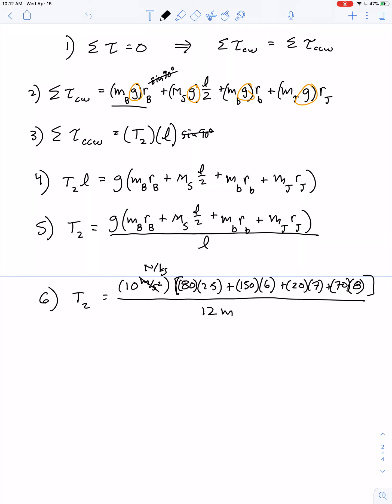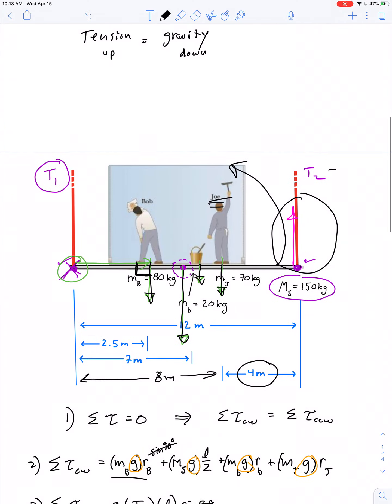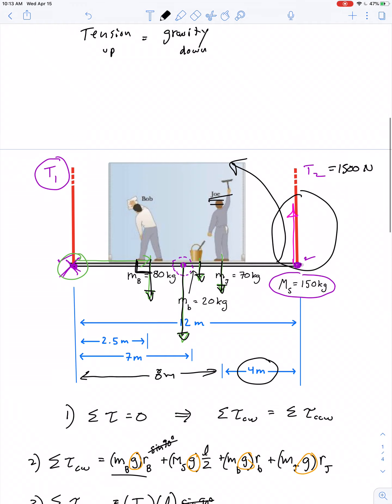The meters cancel out, the kilograms cancel out, and we're just left with newtons. If you plug it all in without making any mistakes, you should get 1,500 newtons as the tension in the cable on the right.